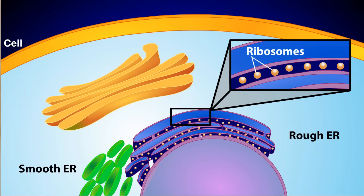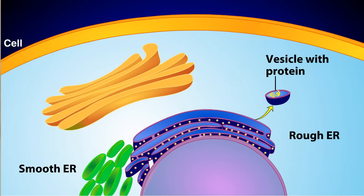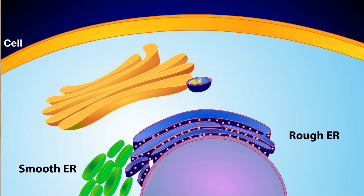Ribosomes are responsible for producing proteins, which are packaged in transport vesicles and carried to the Golgi apparatus. The smooth endoplasmic reticulum, or smooth ER, lacks ribosomes on its surface. This is why it's called smooth.